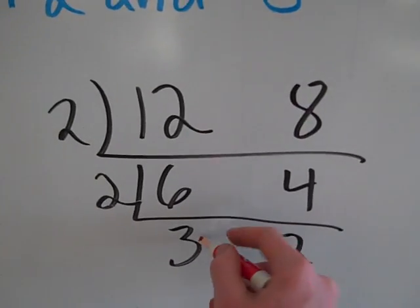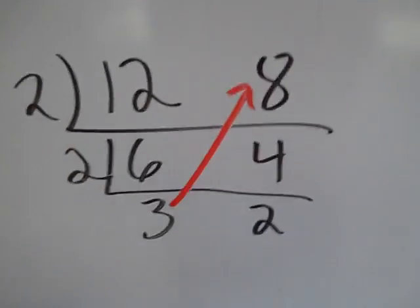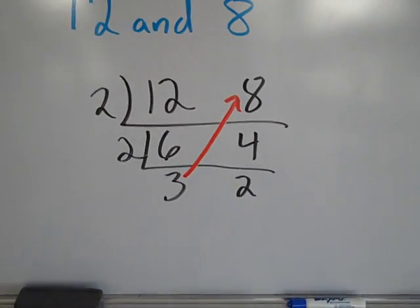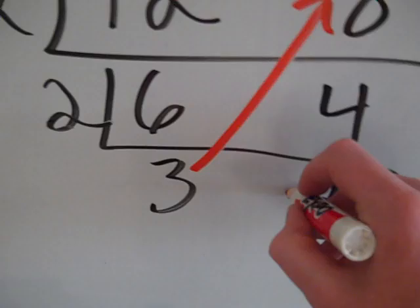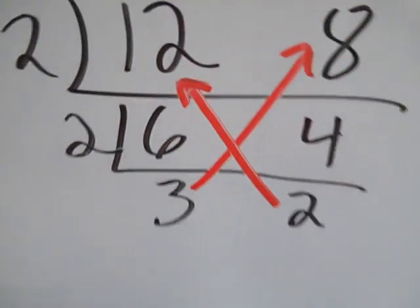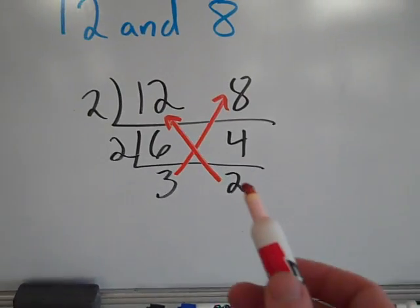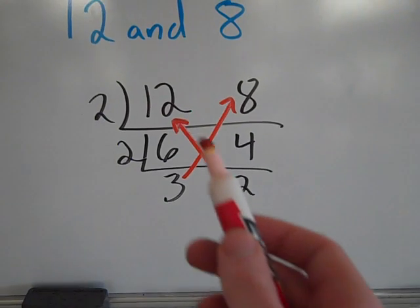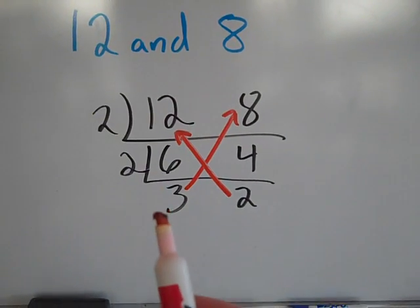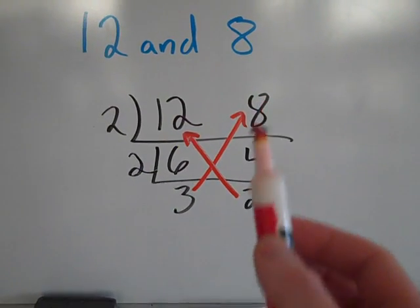We're going to draw a line from 3 and point it to 8. And then I'm going to make my multiplication symbol since we're doing least common multiple, multiply, I'm going to go from the 2 to the 12. So I've gone from the bottom most term to the diagonal top most term, and then the bottom most term to the diagonal top most term.